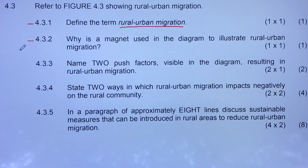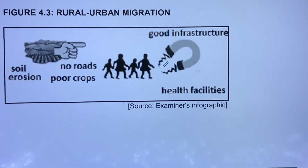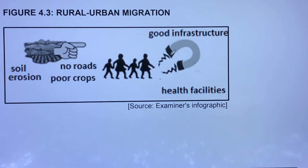Question 4.3.2 asks: why is a magnet used in the diagram to illustrate rural-urban migration? The magnet is used to show the significance or effect of pull factors — which attract people to move from rural areas to urban areas. It simply shows the existence of pull factors.